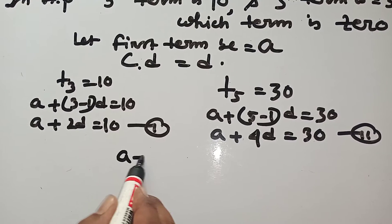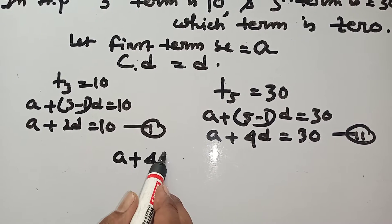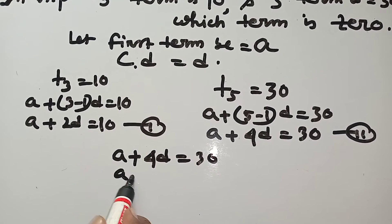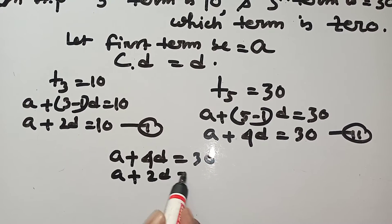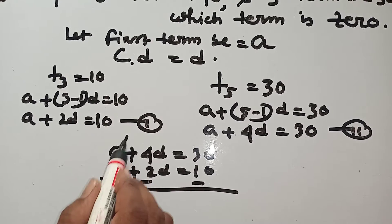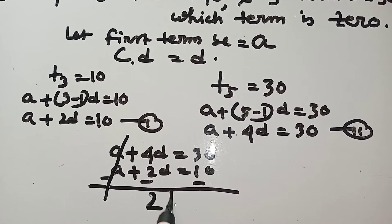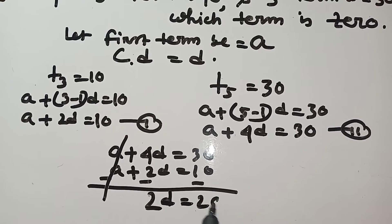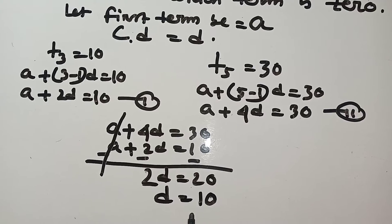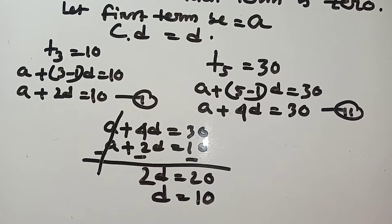By simultaneous equation method, subtract the equations. 2D equal to 20, D equal to 10. Now find the value of A.